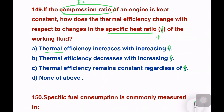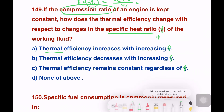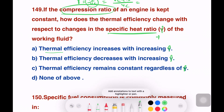The compression ratio R equals V-total divided by Vc, where V-total is Vc plus Vs divided by Vc. Vc is the clearance volume and Vs is the stroke volume.